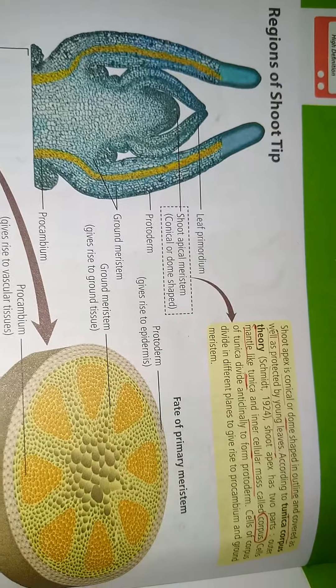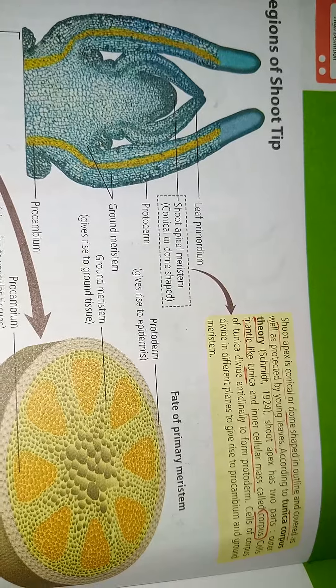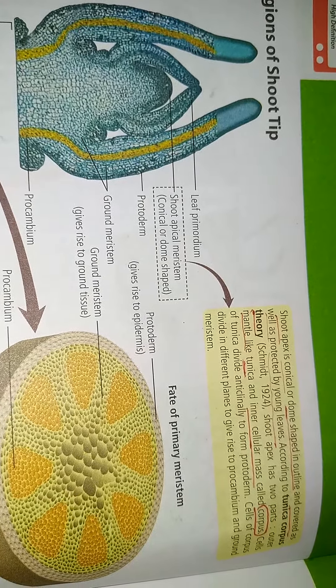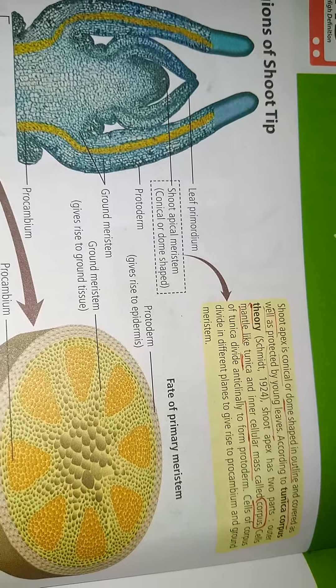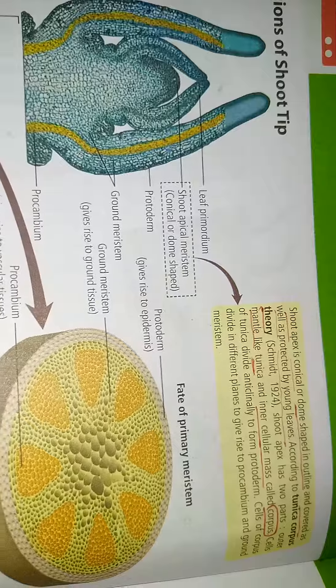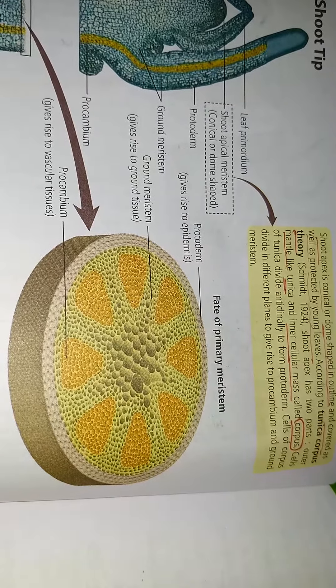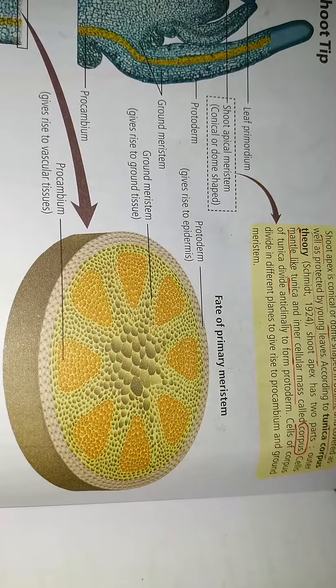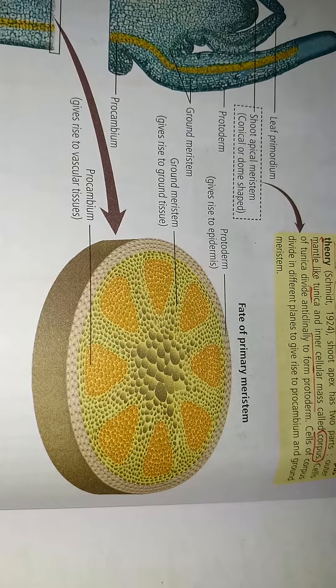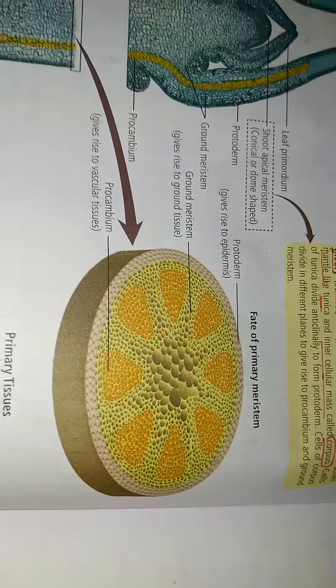The regions of the shoot apex include: leaf primordium, shoot apical meristem, conical cell dome shape, protoderm, ground meristem system, and procambium. These are the three primary meristem systems: protoderm gives rise to the epidermis, ground meristem gives rise to the ground tissue, and procambium gives rise to the vascular tissue.